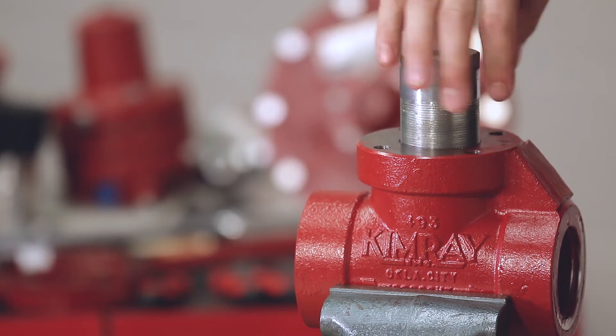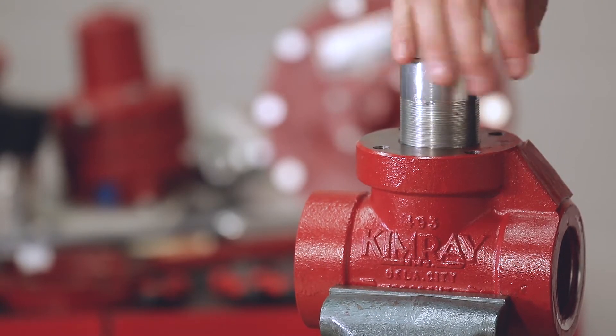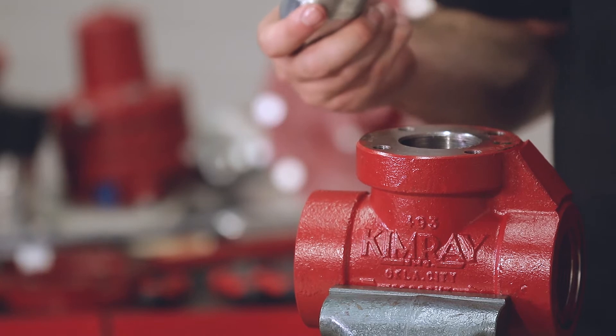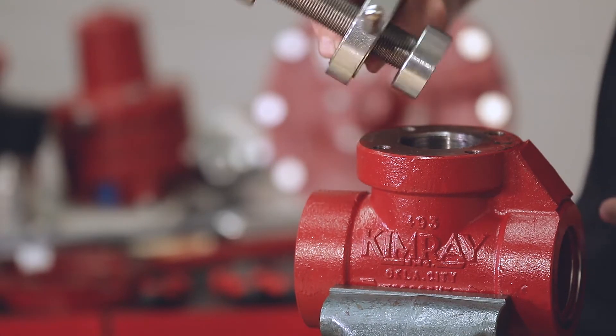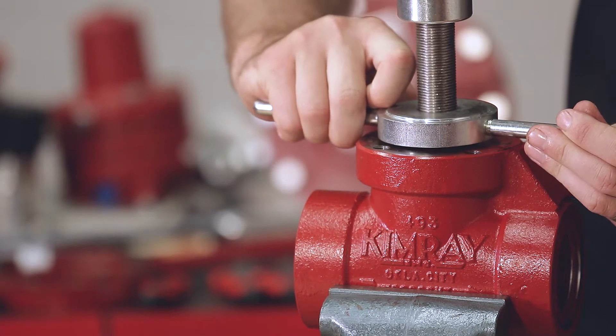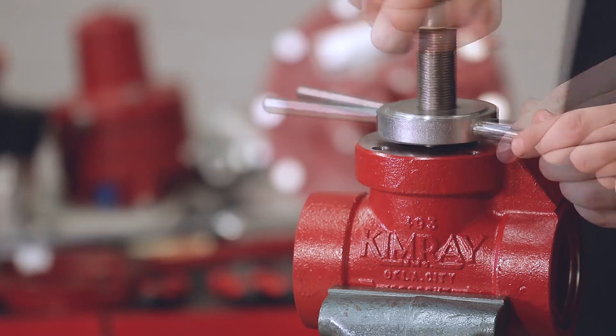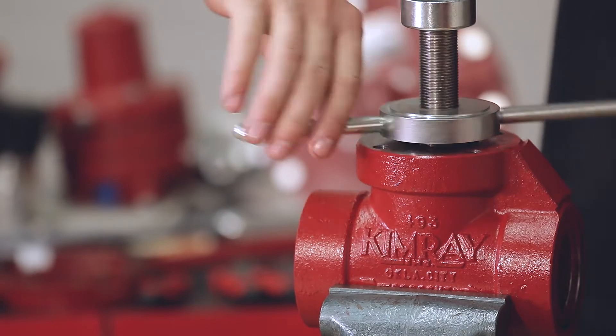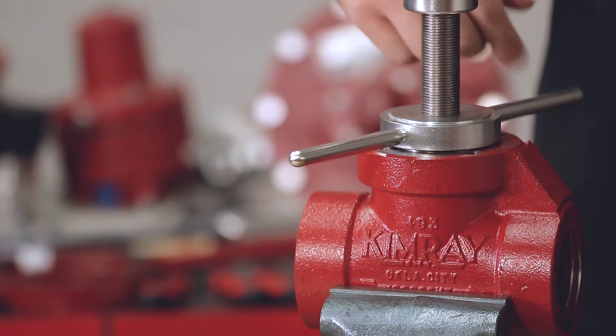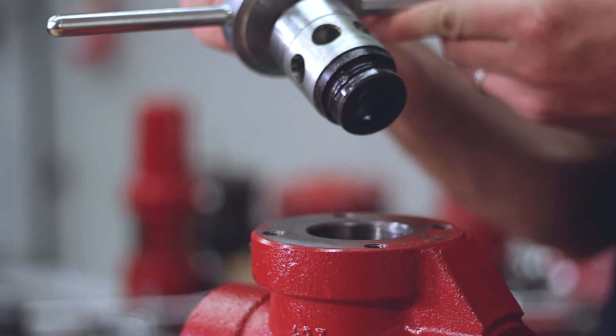Another scenario could be that your cage comes unthreaded from the stuffing box and stays in the body along with the seat. Just flip your Kimray seat removal tool over, thread it onto the cage, and remove your cage and seat all in one piece.